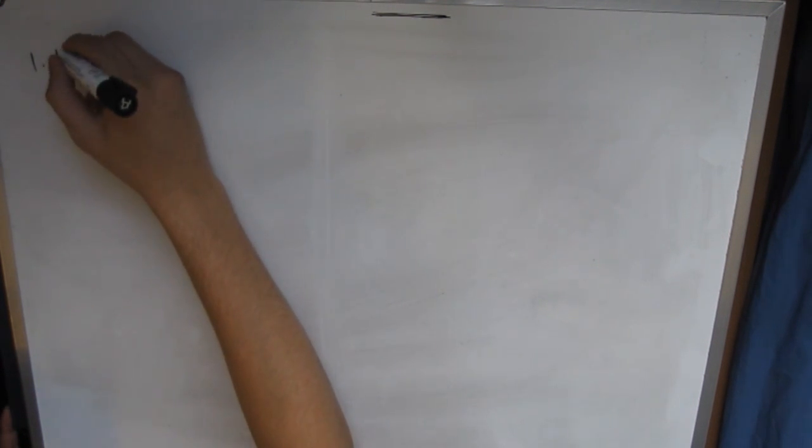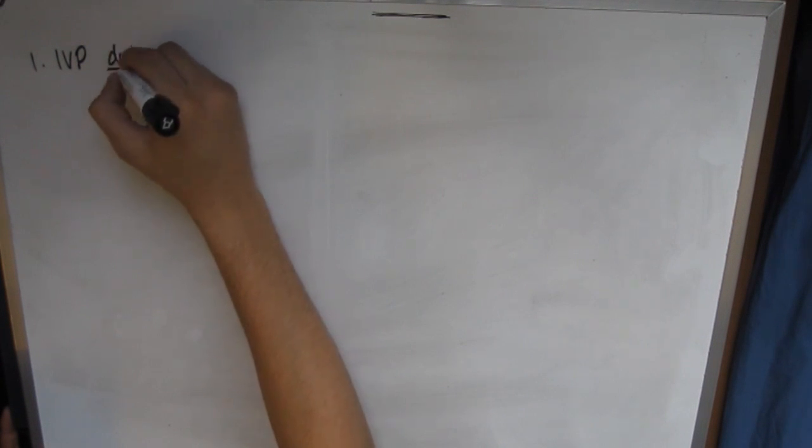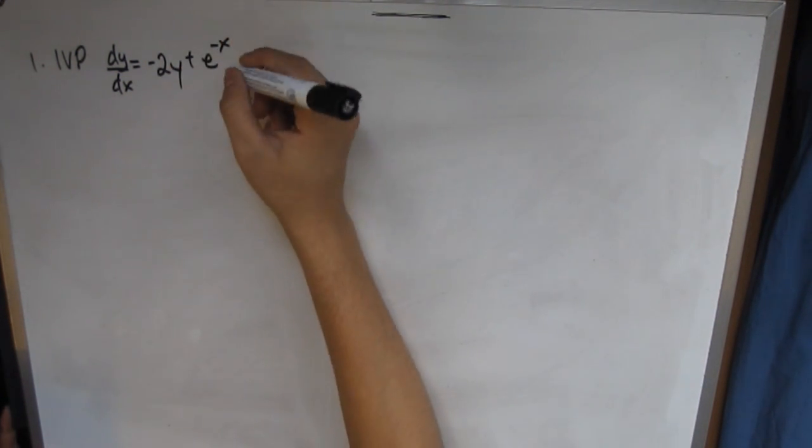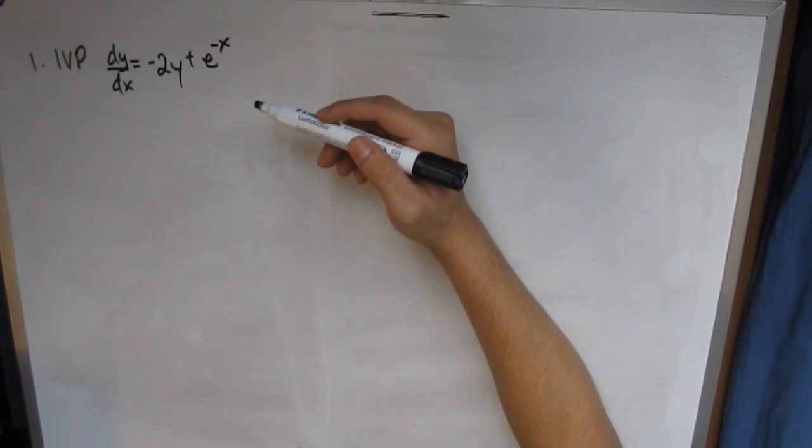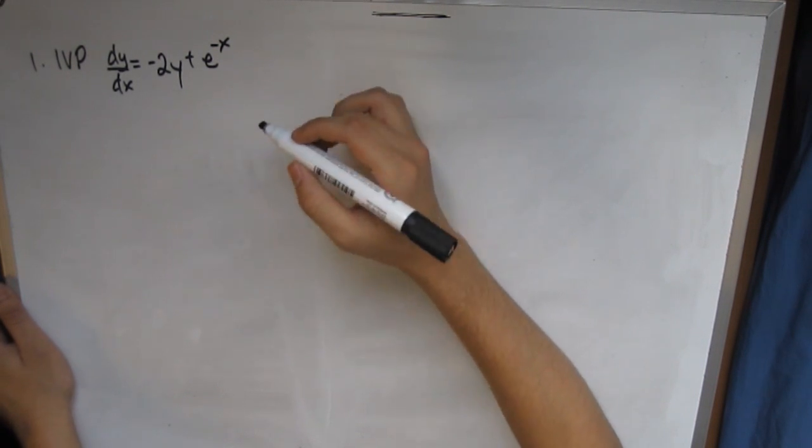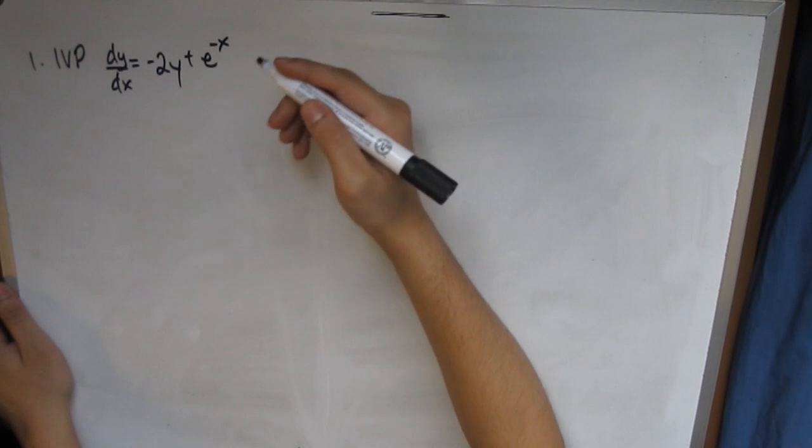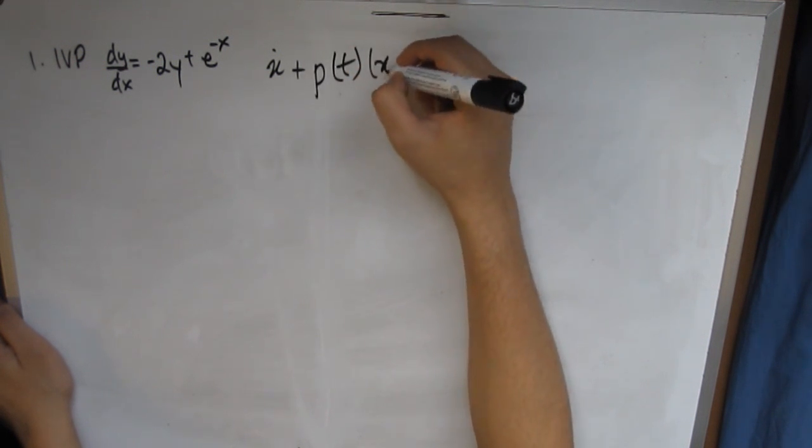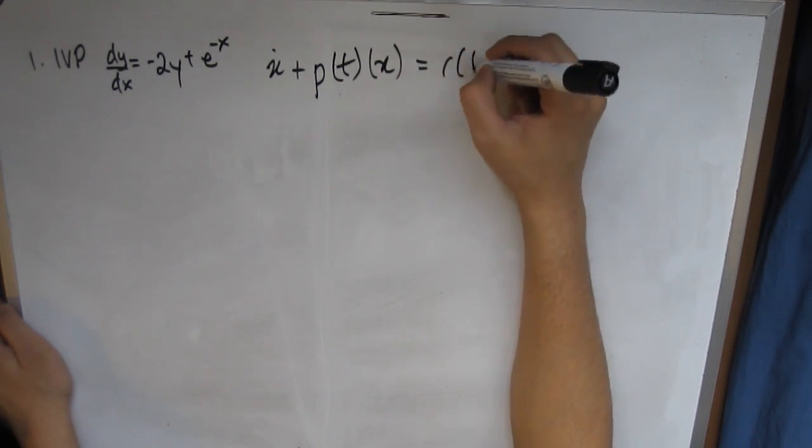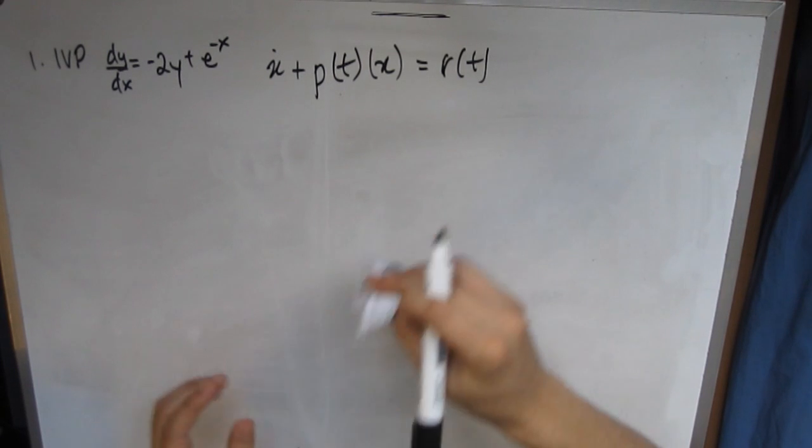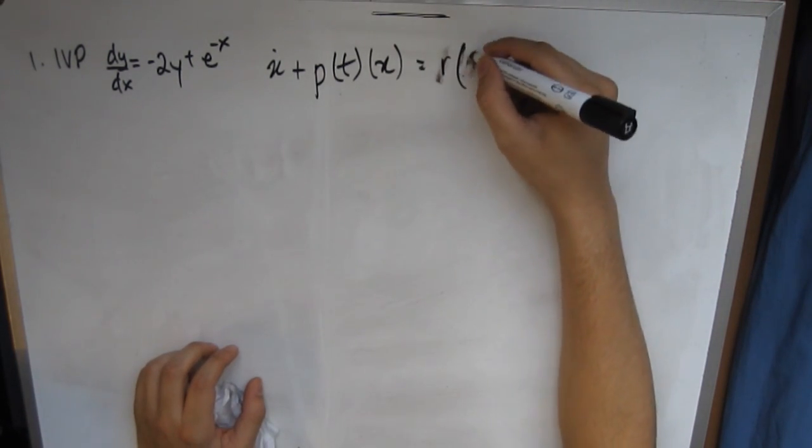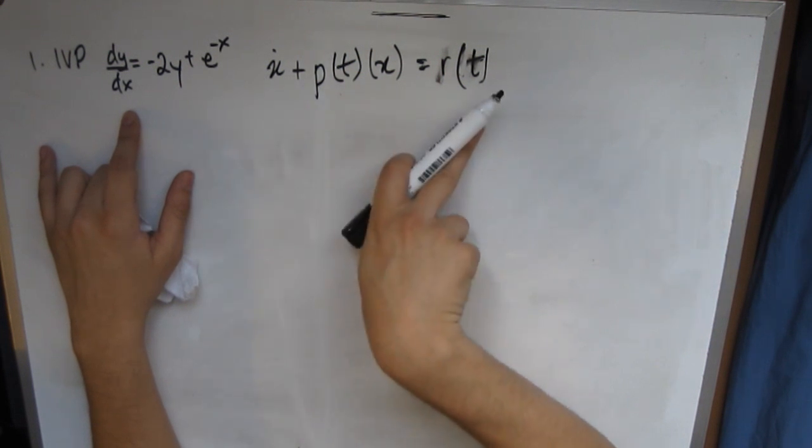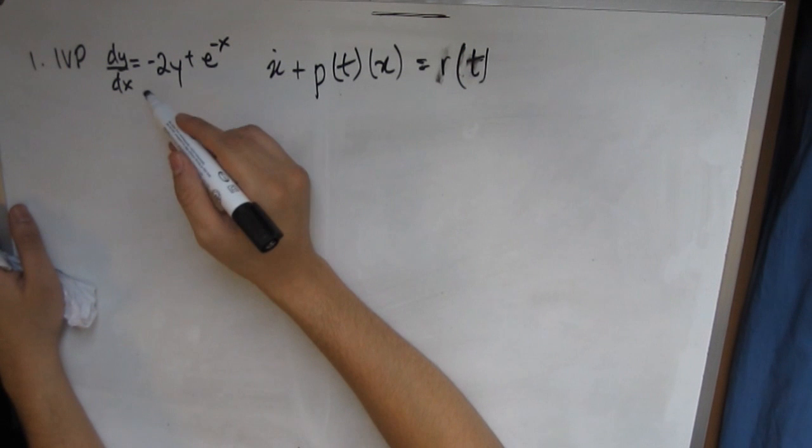So that's basically the IVP of dy/dx which is equal to -2y + e^(-x). Now when you look at an equation like this, you directly get the sense that, well, when I look at an equation like this, I generally look at a certain equation that we were taught, which was x derivative of x plus p(t)(x) times x equals r(t). Now if you notice, this equation can actually be written in form that resembles this, obviously without the x and t's. So if we just take the -2y to the other side,